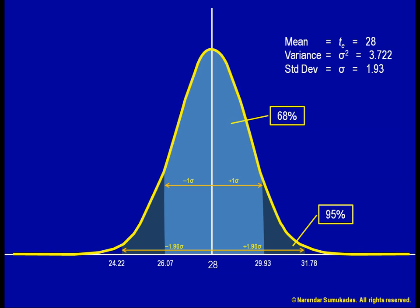Similarly, to get a 90% probability interval, we look for plus or minus 1.645 standard deviations from the mean. So there is a 90% probability that the project will take between 24.83 and 31.17 days. Armed with all these numbers, we can make much better decisions regarding the project.